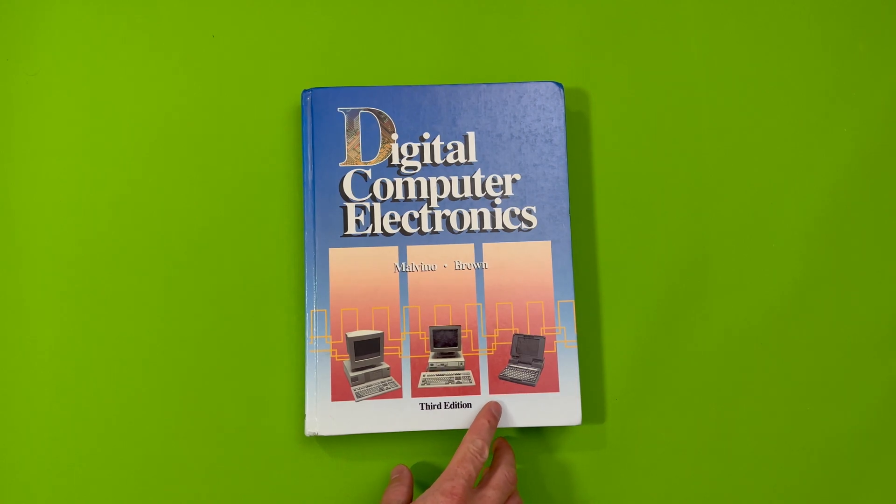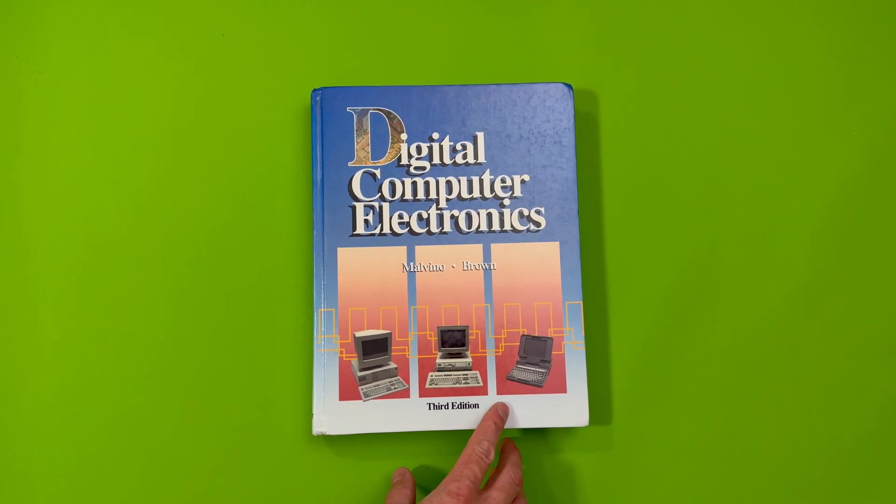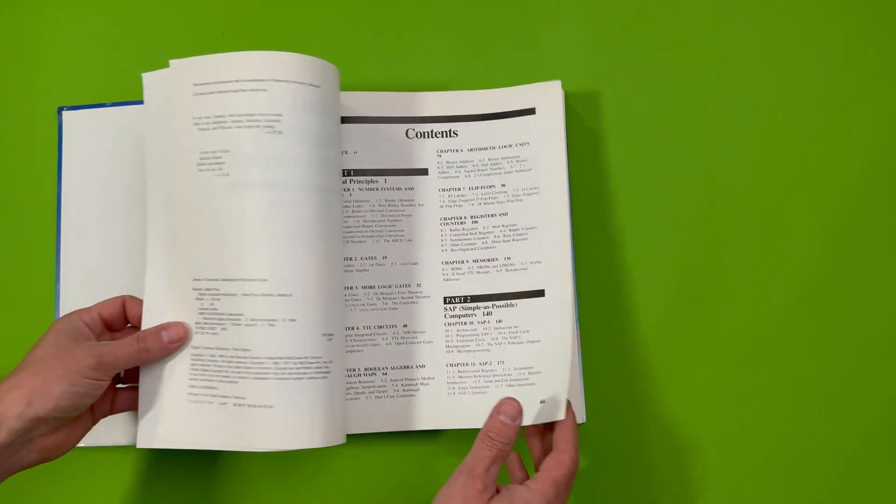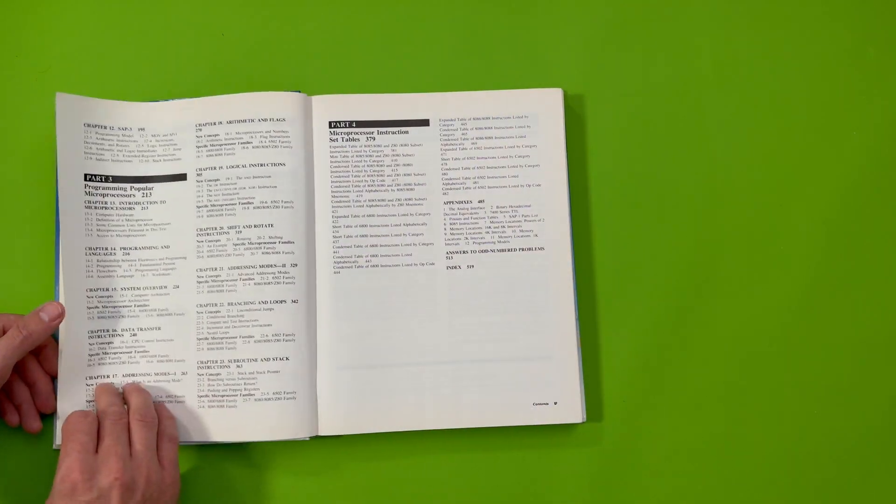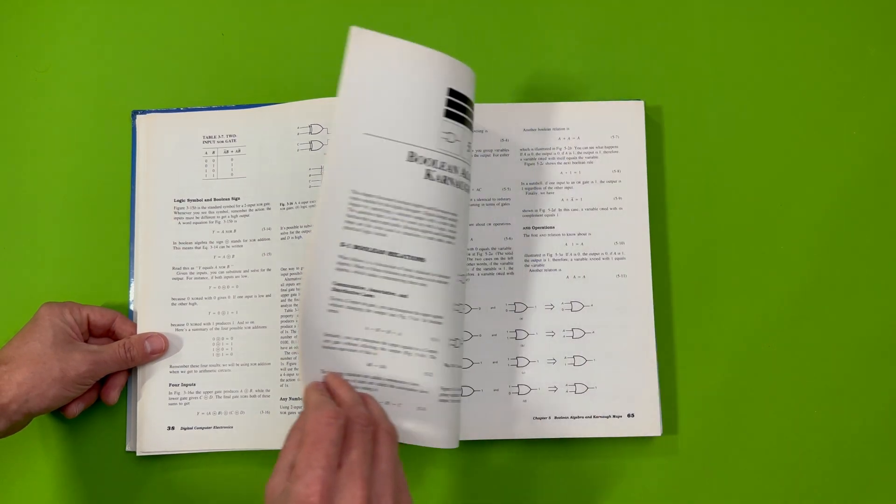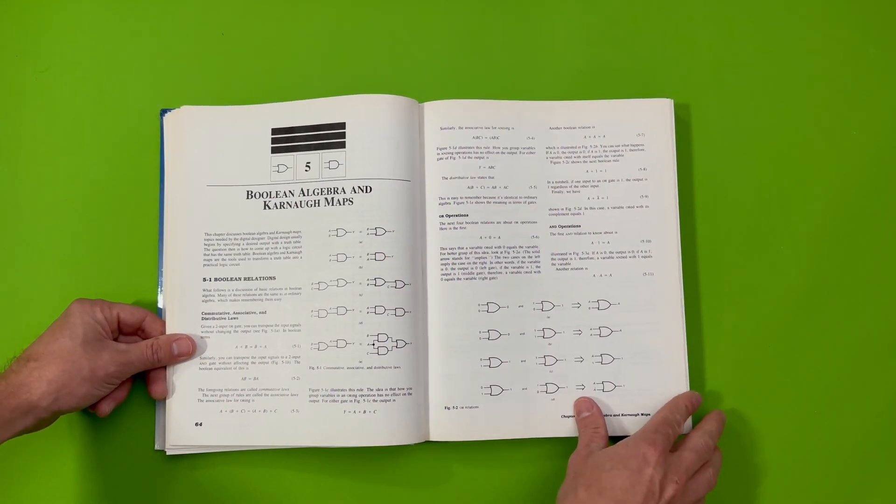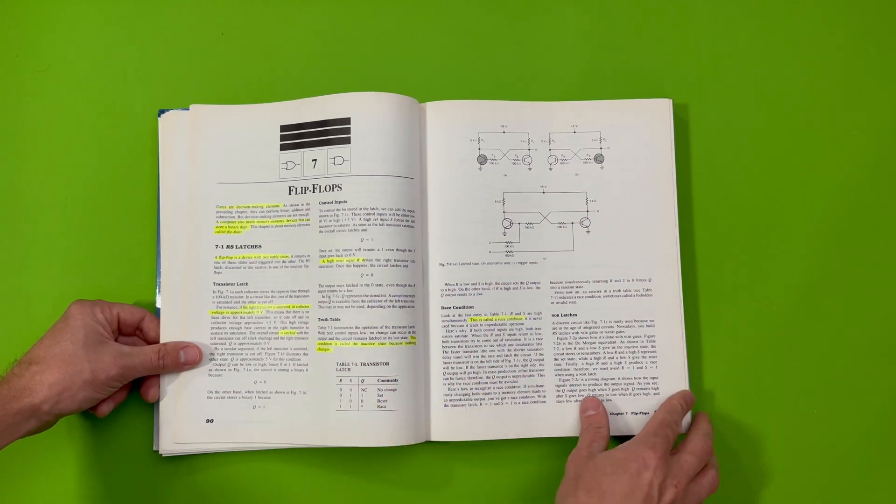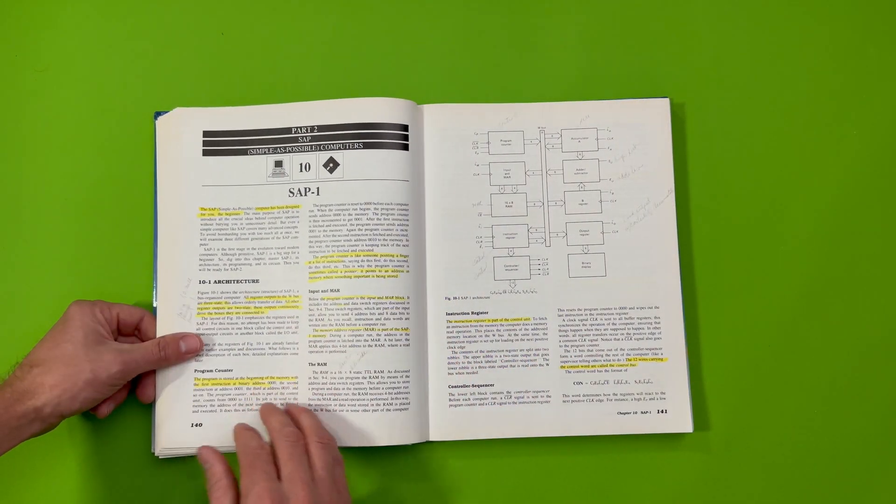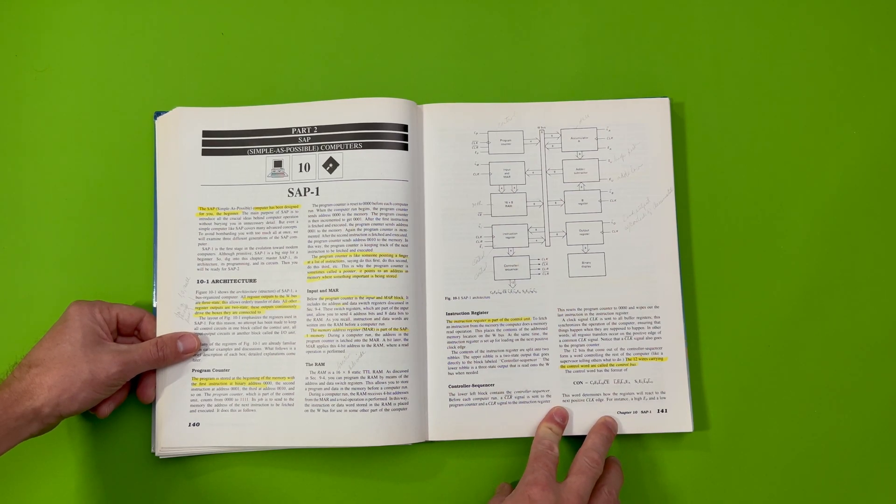I also have this book here, Digital Computer Electronics by Malvino, which is a great read for those interested in learning more in-depth about digital computers, gates, registers, counters, and just basic electronics that make up a computer. The book contains a few versions of SAP computers, which are easy to understand and follow. I'm not getting paid to promote this book, but I do highly recommend it.